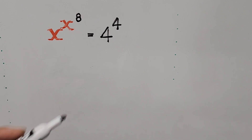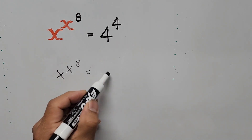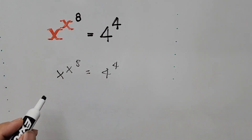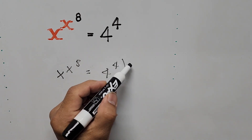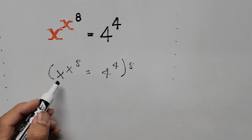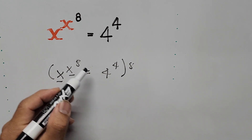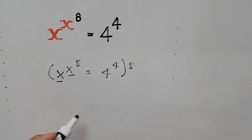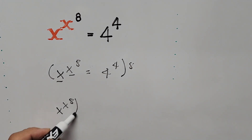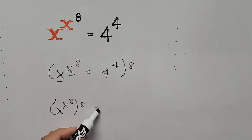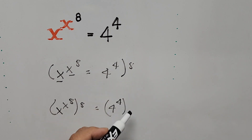So we have x to the power of x to the power of 8 equals 4 to the power of 4. From here, we raise the equation to the power of 8, since our aim is for the base to look the same way as its exponent, x to the power of 8. So the left side is x to the power of x to the power of 8, raised to the power of 8, equals 4 to the power of 4, raised to the power of 8.